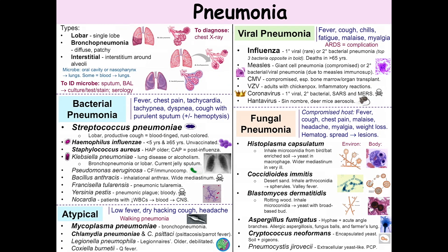Pseudomonas aeruginosa infects people with underlying issues, such as cystic fibrosis patients and those who are immunocompromised. It has many virulence factors, including two pigments: pyocyanin and pyoviridin. It also has a thick mucoid alginate capsule. Lastly, it has exotoxin A, which has the same mechanism as diphtheria toxin — it ADP-ribosylates EF2, inhibiting protein synthesis.